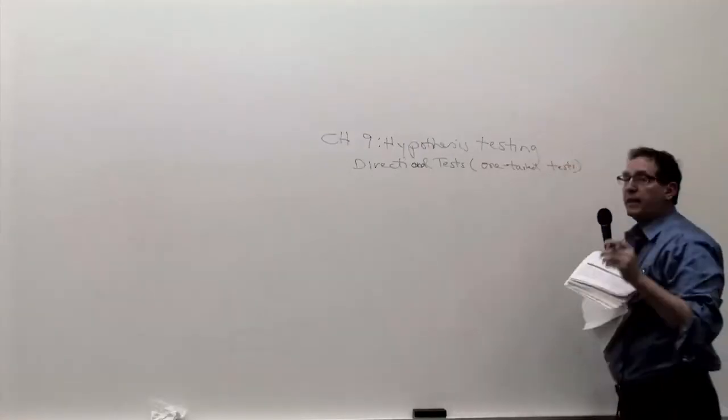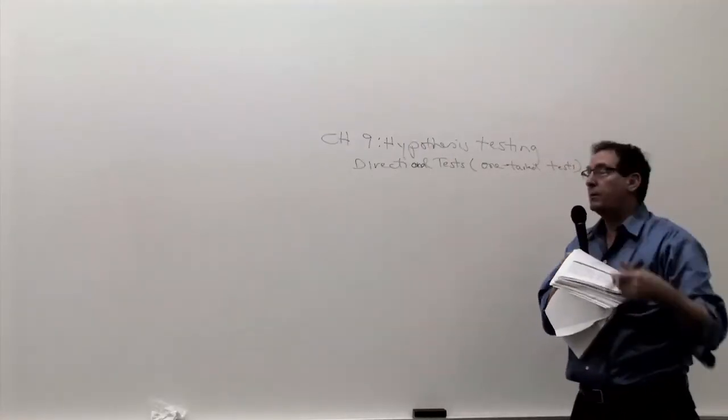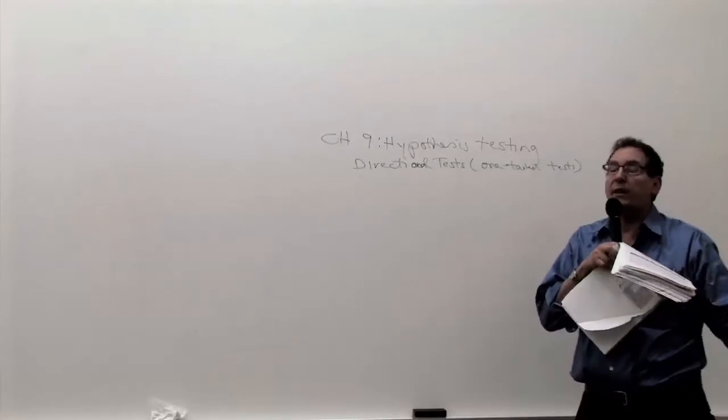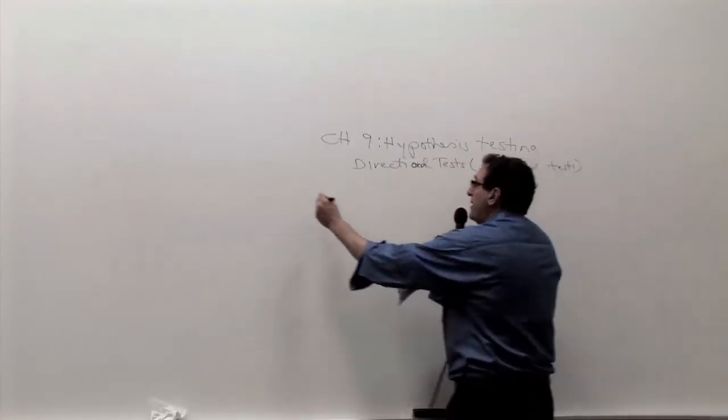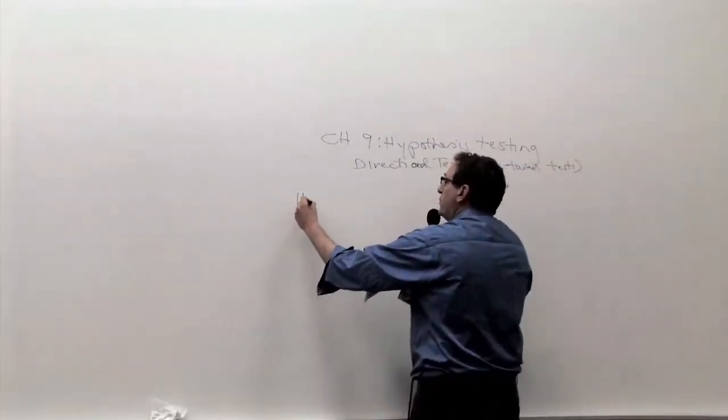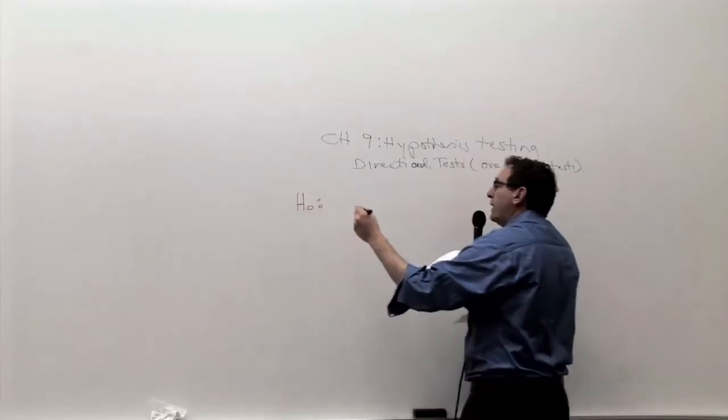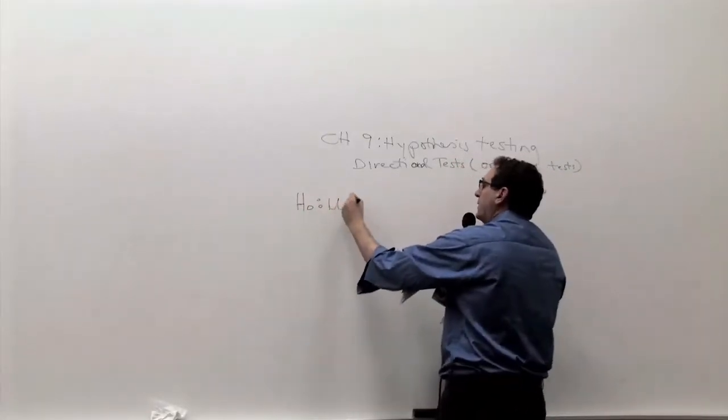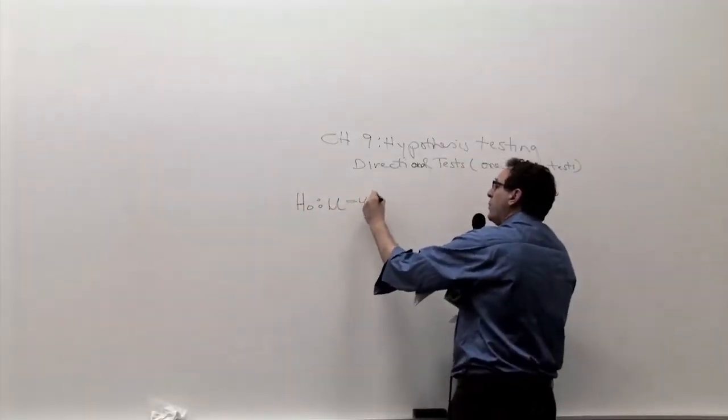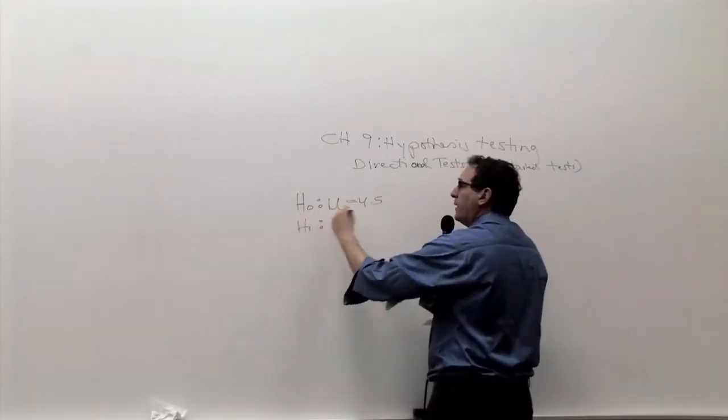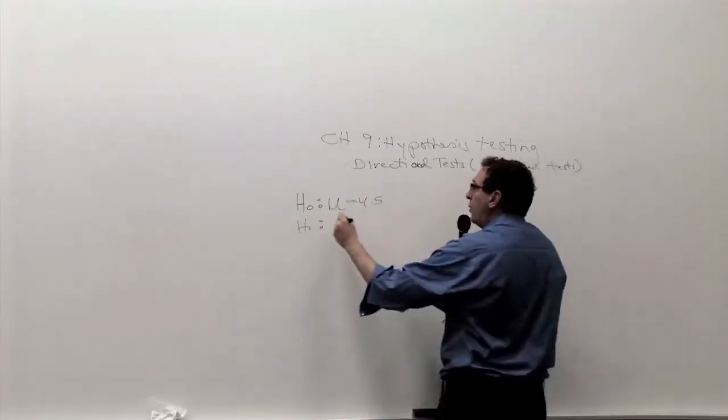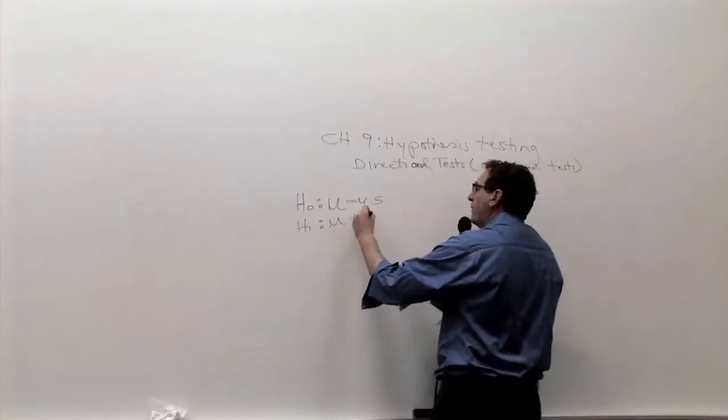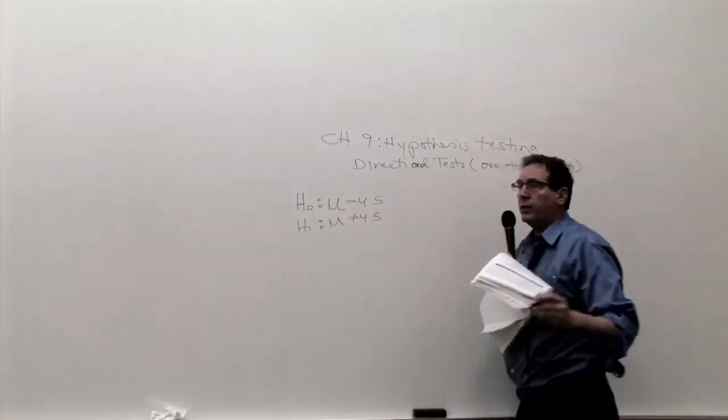I'm going to begin by contrasting the example we're going to do in a couple of minutes to the traditional example we've been doing till now. In the case of the random number table, which I've been using as a paradigmatic example for teaching hypothesis testing, we have H0: mu equals 4.5, H1: mu not equal to 4.5. And let's think about this again from a fundamental point of view.